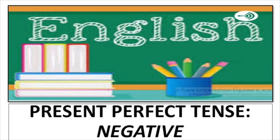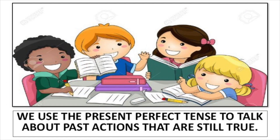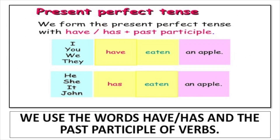Today we're going to learn and practice how to say sentences about things we haven't done or haven't happened — and that's what we mean by negative. We use the present perfect tense to talk about past actions that are still true. The present perfect tense — things that we've done already but are still true now. We use the words have or has and the past participle of verbs.